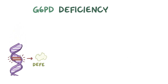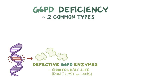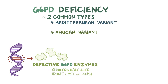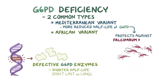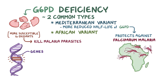The G6PD mutations can cause defective G6PD enzymes to be produced, and these have a shorter half-life, meaning they don't last as long as normal enzymes. There are two common types of G6PD deficiency: a Mediterranean and an African variant. The Mediterranean variant is characterized by a more markedly reduced half-life of G6PD. Sometimes this can actually be an advantage, since it provides protection against falciparum malaria. G6PD deficiency makes a parasite-infected erythrocyte more susceptible to dying from oxidants, which means it will also kill the malaria parasites. Because malaria has historically circulated in Africa, the genes underlying these diseases are thought to have conferred a natural selection advantage, and therefore became more common in the genetic pool.